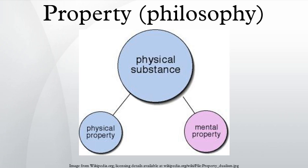Intrinsic and extrinsic properties: an intrinsic property is a property that an object or a thing has of itself, independently of other things, including its context. An extrinsic property is a property that depends on a thing's relationship with other things. For example, mass is a physical intrinsic property of any physical object, whereas weight is an extrinsic property that varies depending on the strength of the gravitational field in which the object is placed.